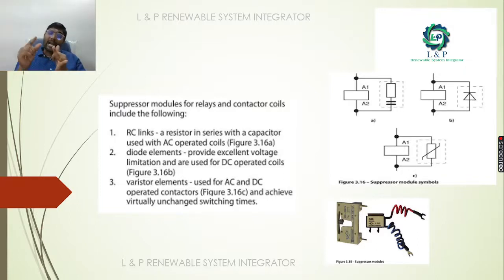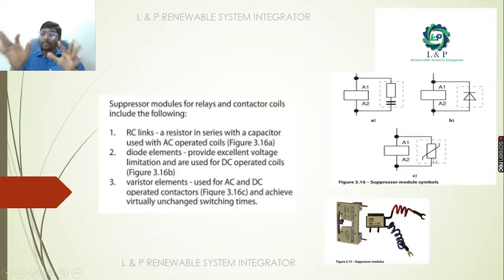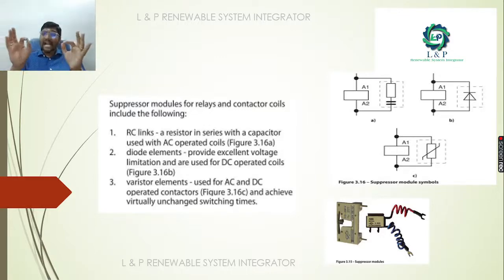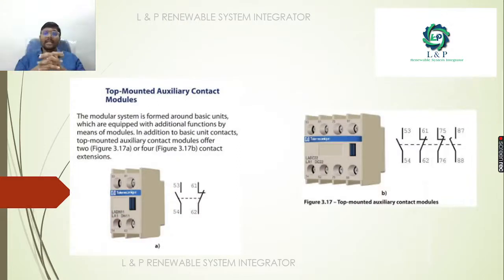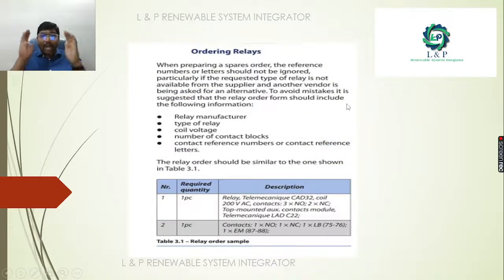The diode element provides excellent voltage limitation and is mostly used for DC operator coils. The varistor element is used for both AC and DC operator contactors and achieves virtually unchanged switching times. Next is the top-mounted auxiliary contact — this is how it looks like, shown as a real-time photo.